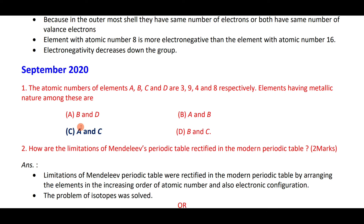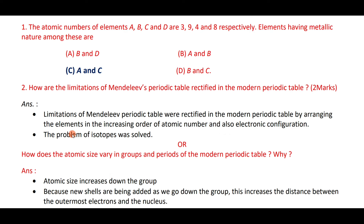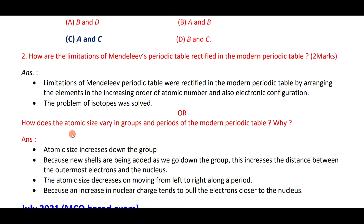Elements with atomic numbers 3, 9, 4, 8 — elements A and C have metallic nature. The limitations of Mendeleev's periodic table were rectified in the modern periodic table by arranging elements in increasing order of atomic number and based on electronic configuration. The problem of isotopes was also solved.